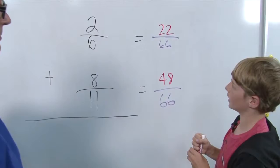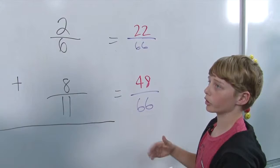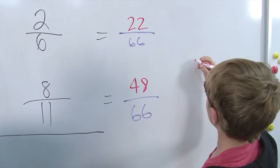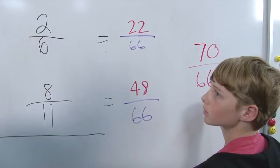Okay. What is the next step? Then, the next step would be to add them. Okay. And then afterwards we would reduce them. Let's go ahead and add them first. Okay. So. And you go ahead and put it over on the side there. That would be seventy sixty-sixths.